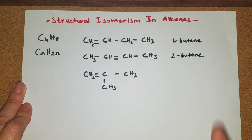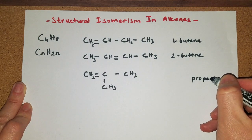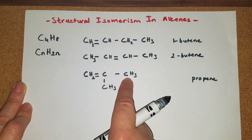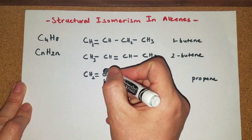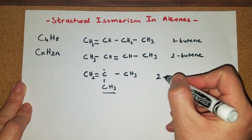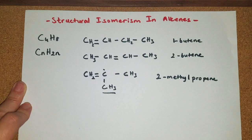Now it's not butene anymore. It is propene. Why? Because we have one, two, three carbon atoms in the longest chain. However on the second carbon atom I do have a methyl group. So I call it 2-methylpropene.